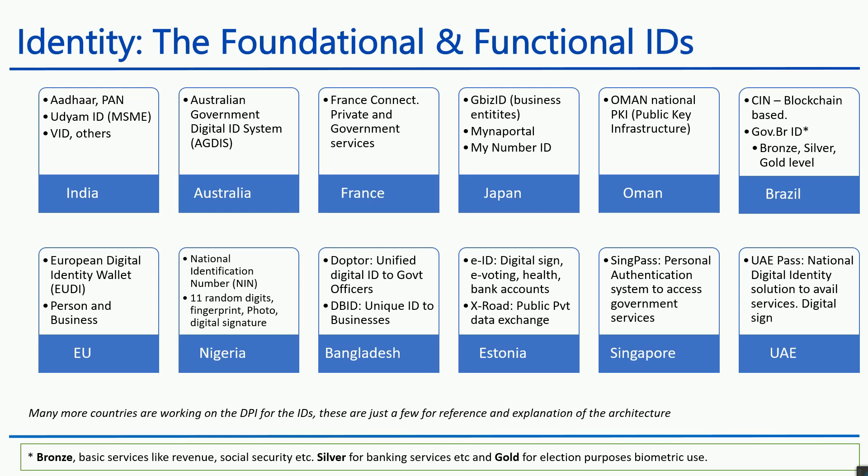Foundational ID is the basic ID on the basis of which multiple things can be created. Functional ID is more specific — for example, a health ID is very functional to healthcare. However, those identities can link up with an individual's foundational identity and create a third layer, which can solve second-level and third-level problems as well.